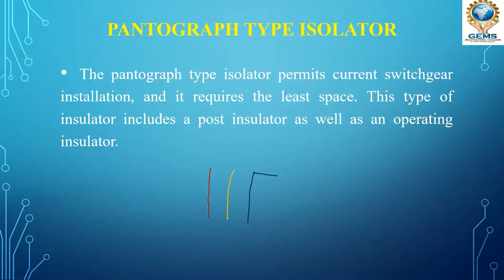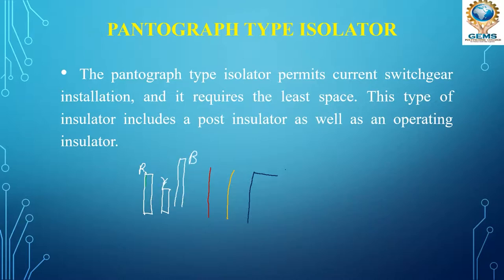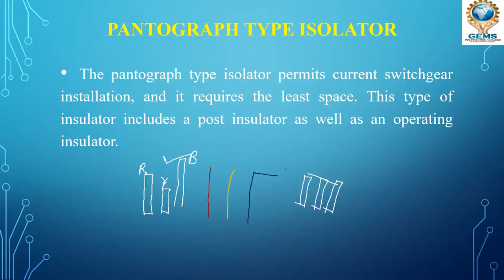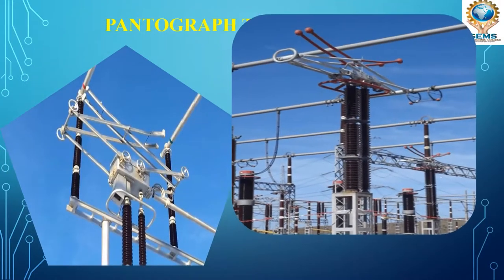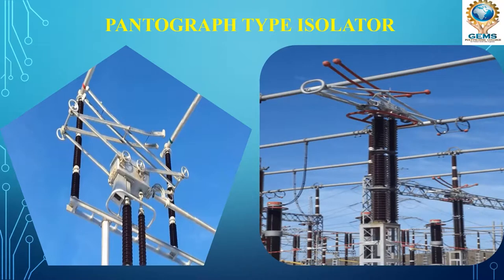If, for example, the R phase has a certain height, the Y phase has a different height, and the B phase has yet another height, using a double break isolator would require equal height for all phases. But if equal height is not available, the pantograph isolator works better in such situations. This is how the pantograph isolator looks — this arrangement is called the pantograph isolator.